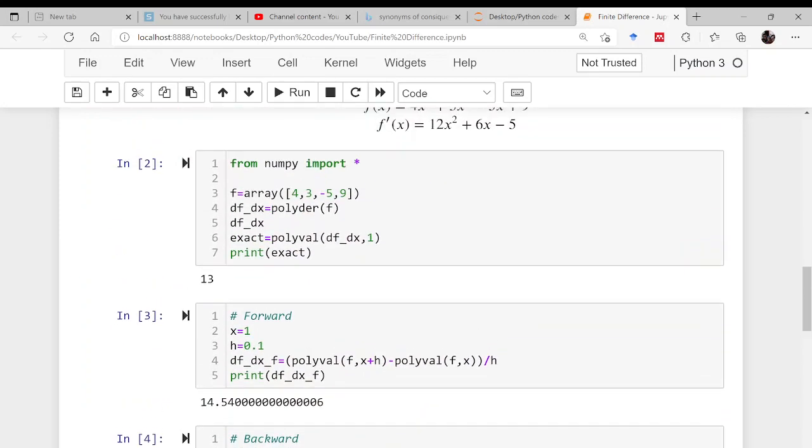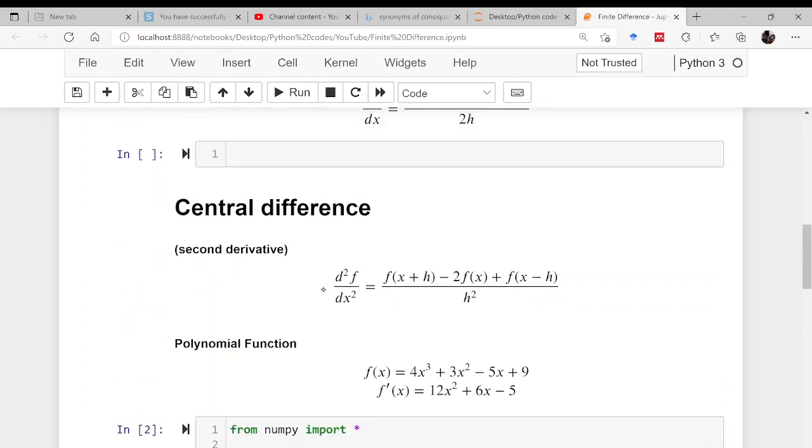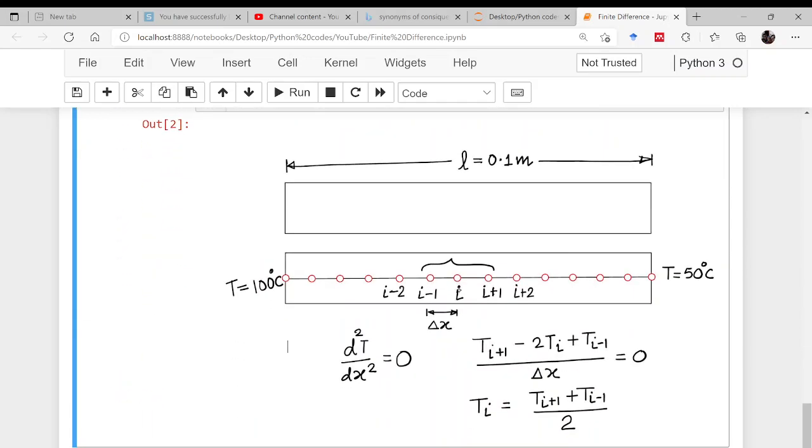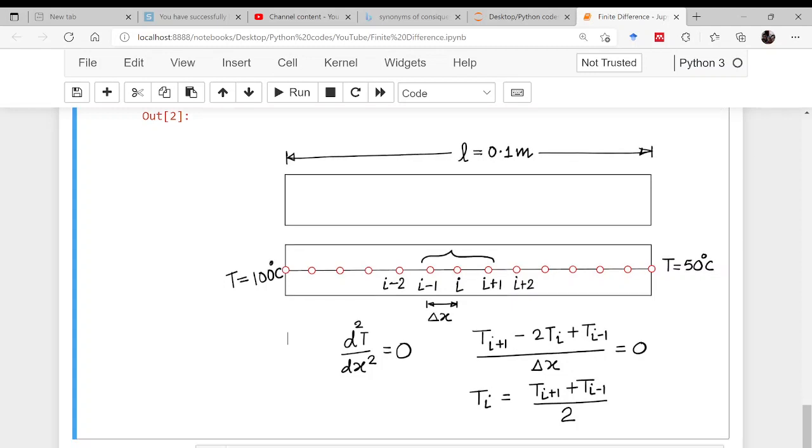This is a second derivative. In the last lecture, I have shown you how to write the second derivative using finite difference: function(x+h) minus 2×function(x) plus function(x-h). This is what I have written here. If this is the i-th location, then x+h will be i+1 and x-h will be i-1, divided by delta x squared. Please make the correction—this is delta x squared, not delta x.